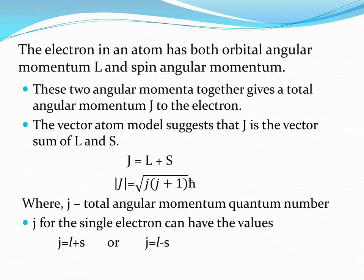We have both orbital angular momentum L and spin angular momentum S. The total angular momentum is represented by J. J is the total angular momentum and it is the vector sum of the orbital angular momentum L and the spin angular momentum S. The vector atom model suggests that J is the vector sum of L and S, i.e., J equals L plus S. The magnitude of J is given by root of j(j+1) times h-cross, where j is the total angular momentum quantum number.